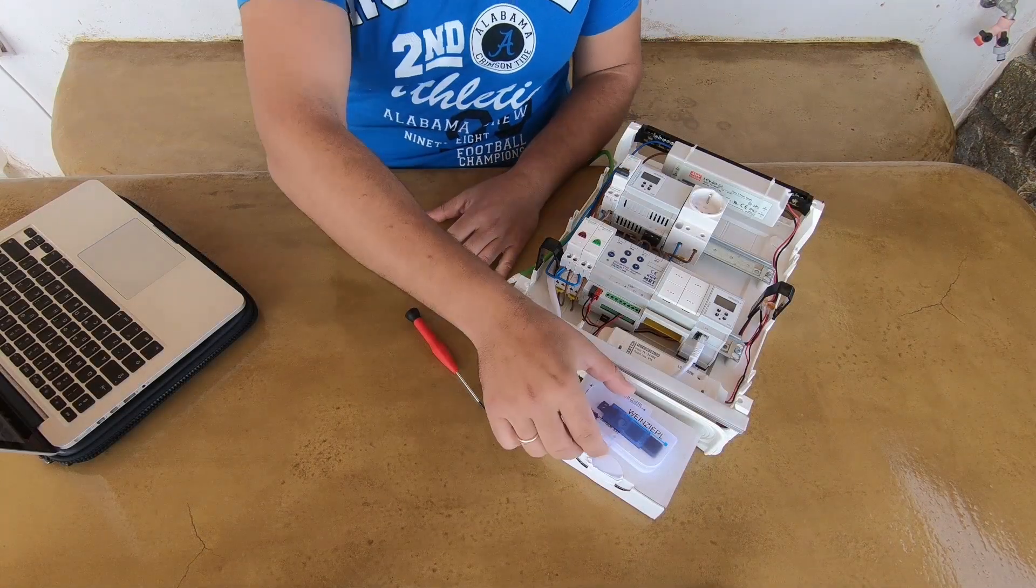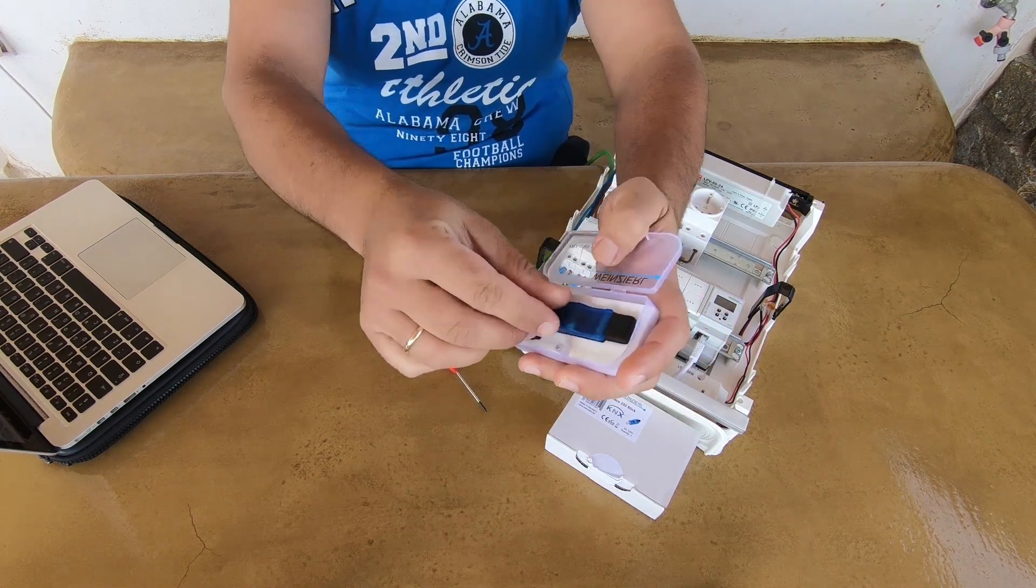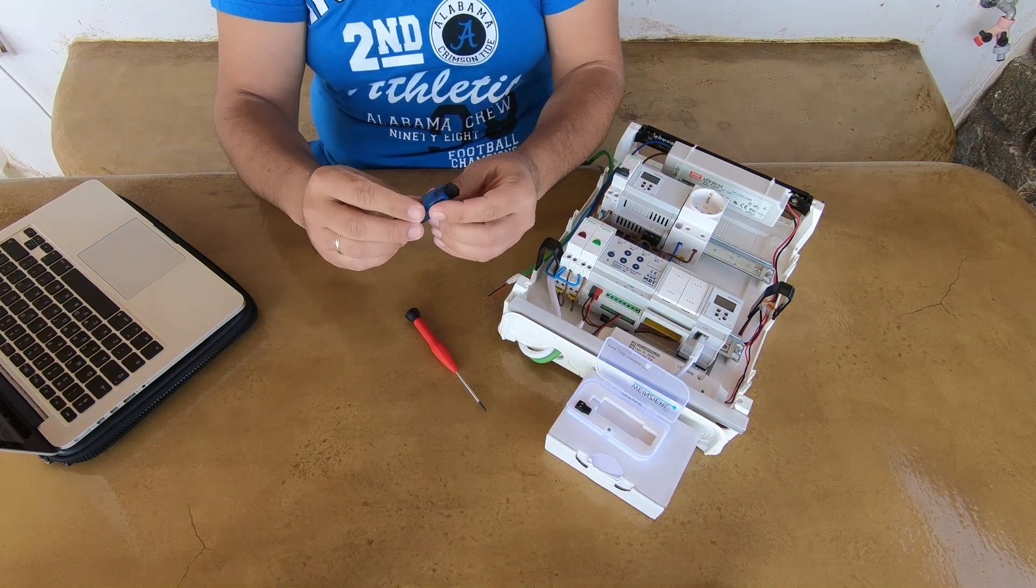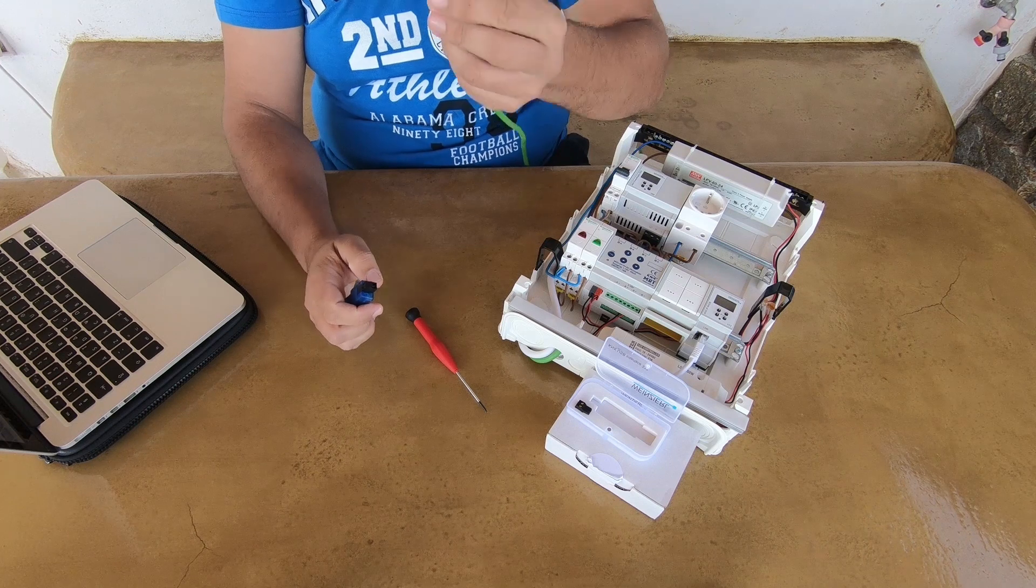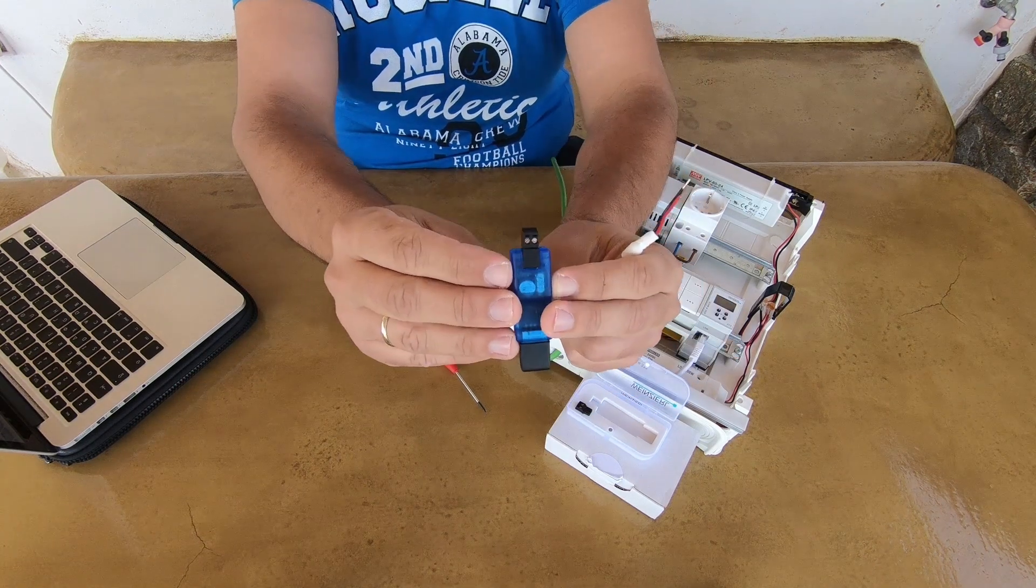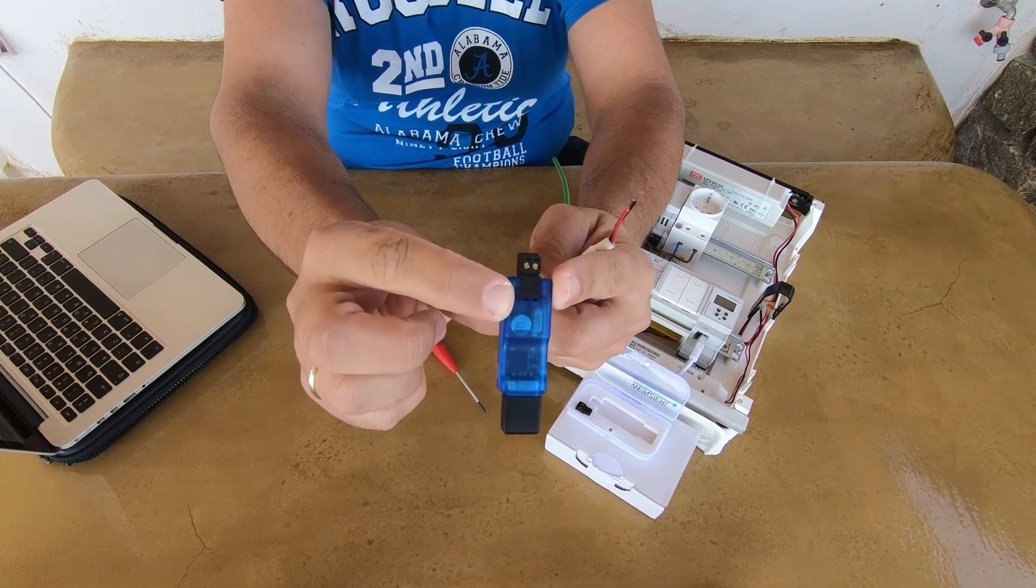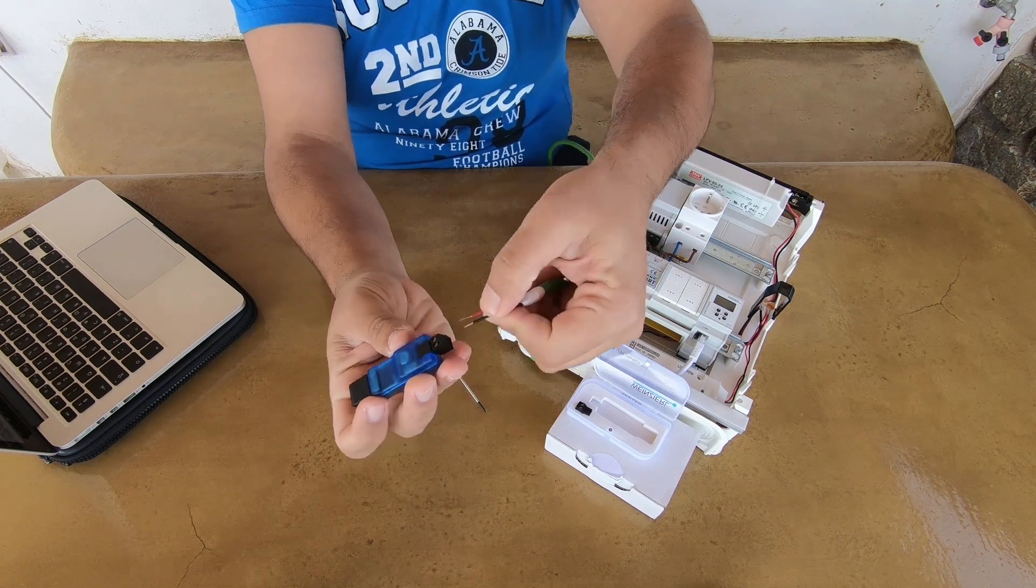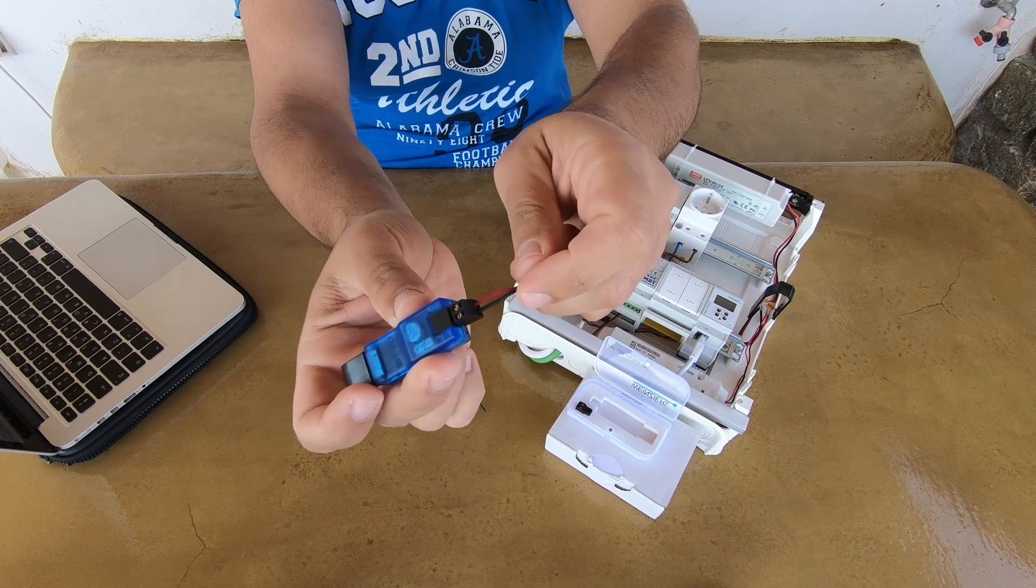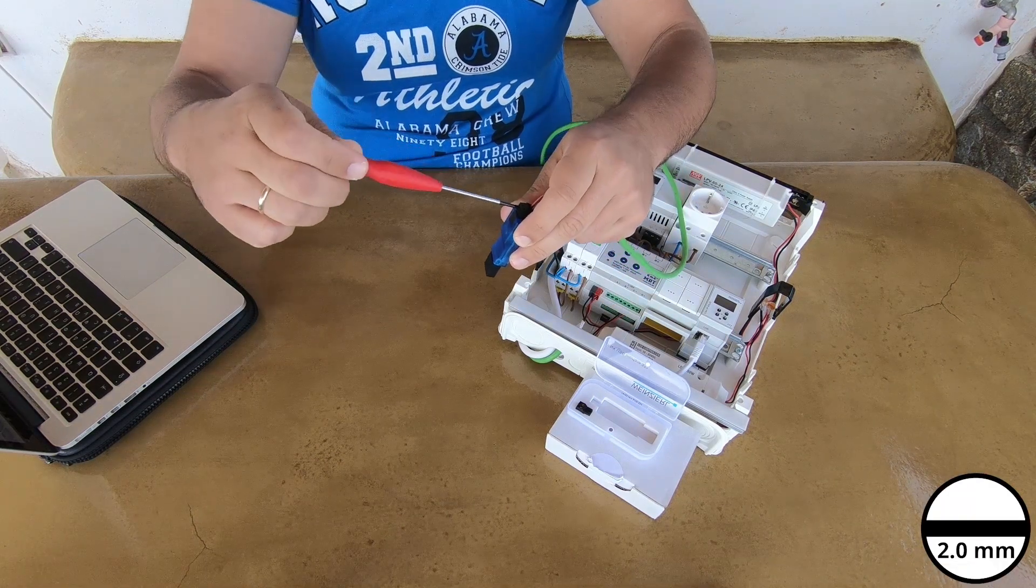As you can see here I have my demo cabinet. Now, take the KNX USB stick and connect the KNX bus cable. Be very careful with the polarity. Insert the red black wires of the KNX bus cable inside the KNX connector of the USB Interface. Screw the wires using a 2mm flat head screwdriver.